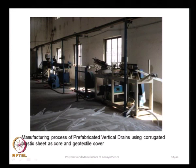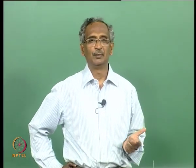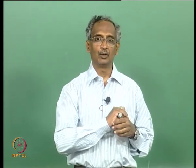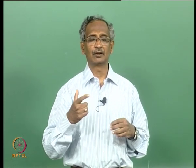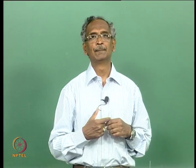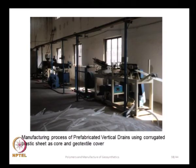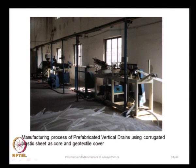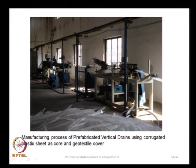Prefabricated vertical drains (PVDs) consist of a core that allows drainage of water and a filter cloth cover that allows water to flow in while keeping out fine soil particles. The core is made of corrugated plastic sheet formed by passing plastic sheets through a machine; it is then covered with a geotextile. PVDs can come in lengths of up to 100 meters.